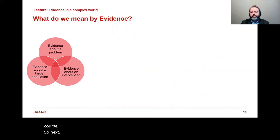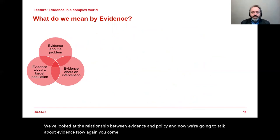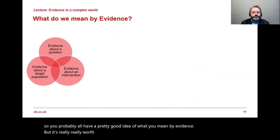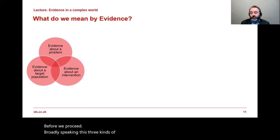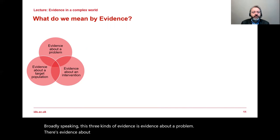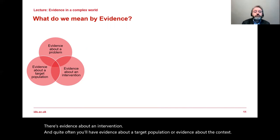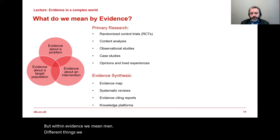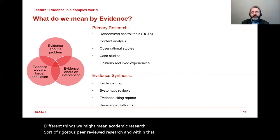Now we're going to talk about evidence itself. You've come on a course about shaping policy with evidence, so you probably have a good idea of what you mean by evidence — but it's really worth interrogating this before we proceed. Broadly speaking, there are three kinds: evidence about a problem, evidence about an intervention, and evidence about a target population or context.